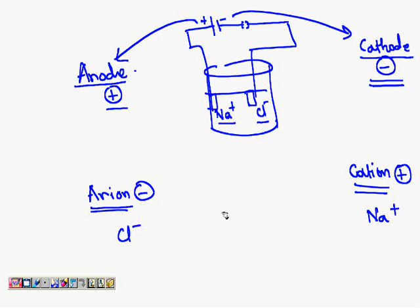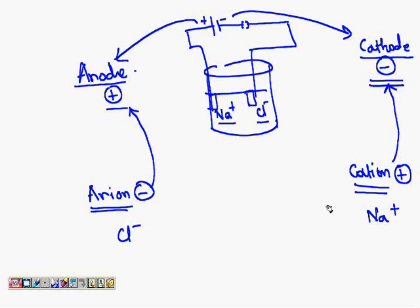The negatively charged ion — the anion — when you start passing electric current, opposite charges attract each other. So the positive electrode will always attract the negative ion — anion will always get attracted towards the anode. And cation will always get attracted towards the cathode, because positive will get attracted towards negative. This will happen once you start the passage of current.